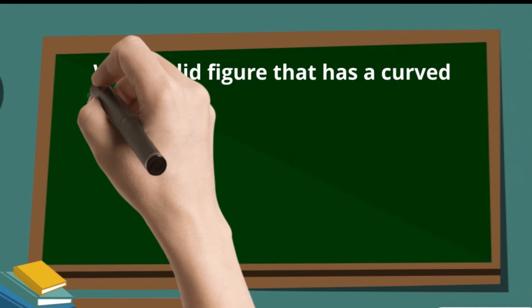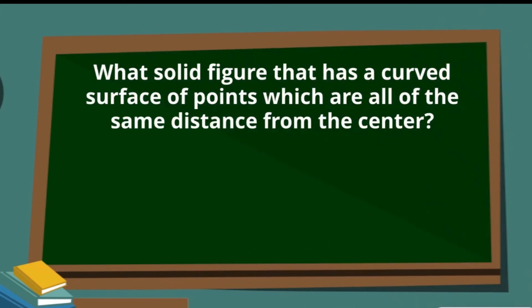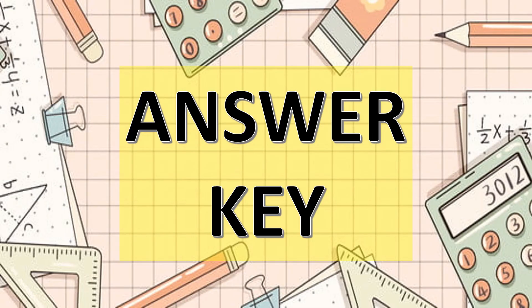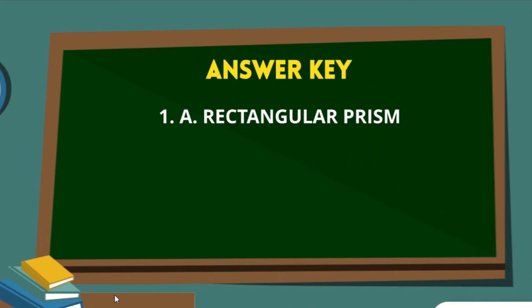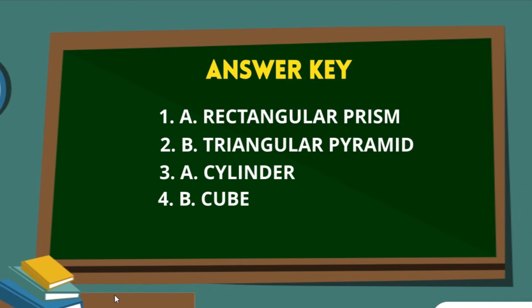Question 5: What solid figure has a curved surface of points which are all of the same distance from the center? A. Sphere, B. Cube, or C. Cylinder. Here is the answer key: Number 1 — A, Rectangular prism. Number 2 — B, Triangular pyramid. Number 3 — A, Cylinder. Number 4 — B, Cube. Number 5 — A, Sphere.